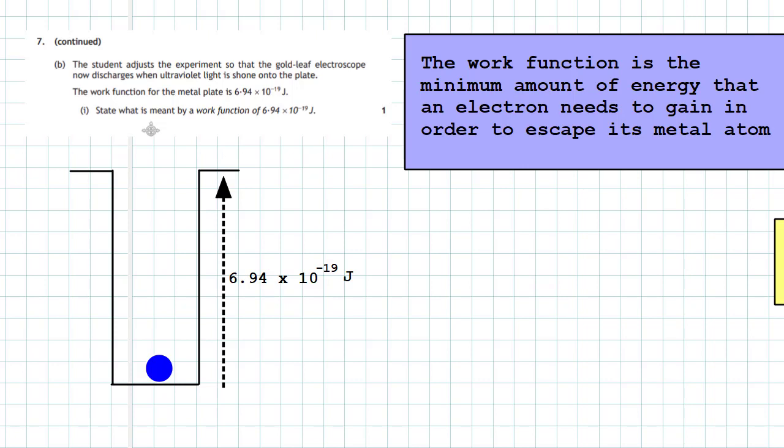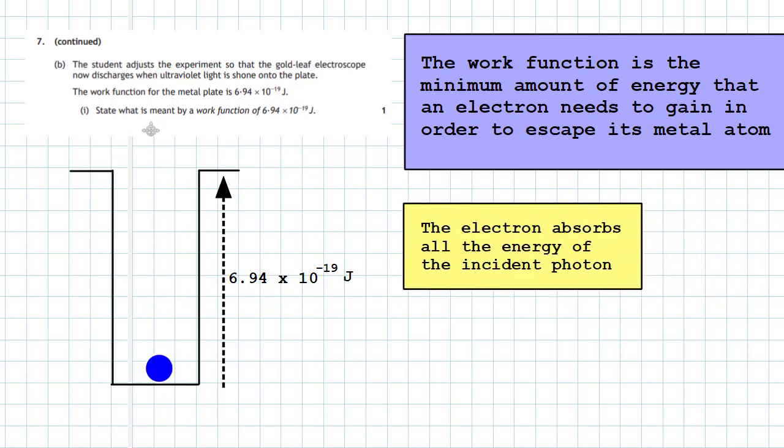Remember, the electron absorbs all the energy of the incident photon. It can't absorb little bits of it. It's got to absorb all or nothing of the energy of the photon. So if that energy of the photon is less than 6.94 times 10 to the minus 19 joules, it will not escape the atom. If it's more than that, it will escape the atom and have some excess kinetic energy.